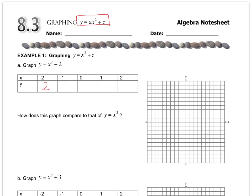0 squared is 0. 0 minus 2 is negative 2. 1 squared is 1. Minus 2 is negative 1. And 2 squared is 4. Minus 2 is 2.